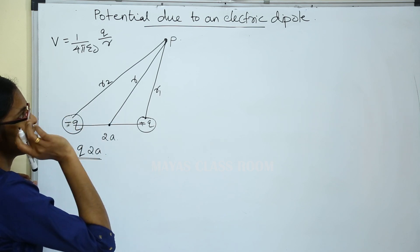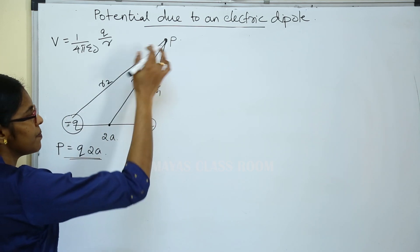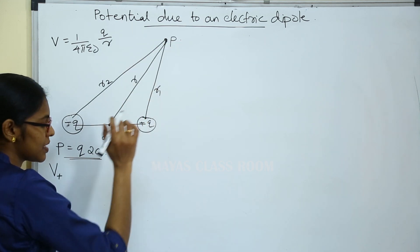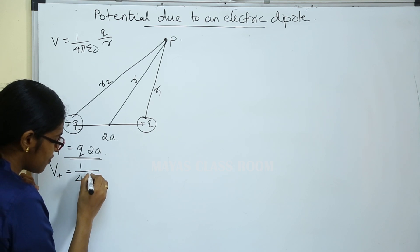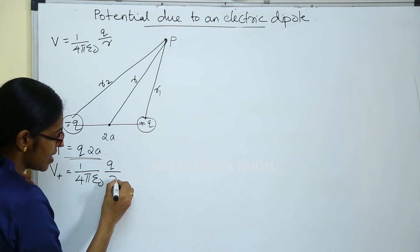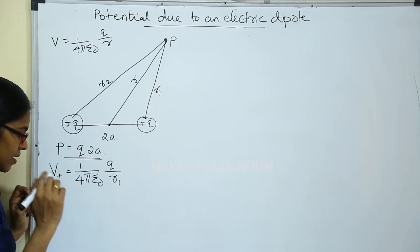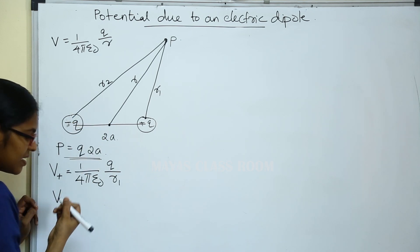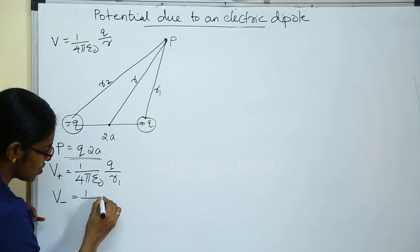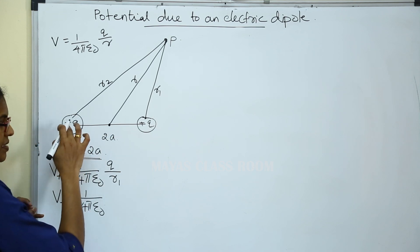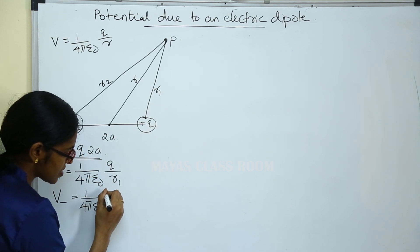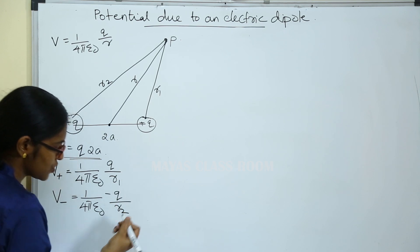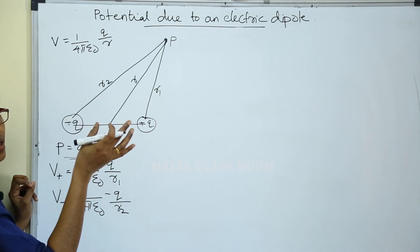We consider the electric potential at point P due to the plus Q charge. V plus is equal to 1 by 4 pi epsilon 0, multiplied by Q divided by R1. Then we consider the potential at P due to minus Q charge. V minus is equal to 1 by 4 pi epsilon 0 multiplied by minus Q divided by R2.